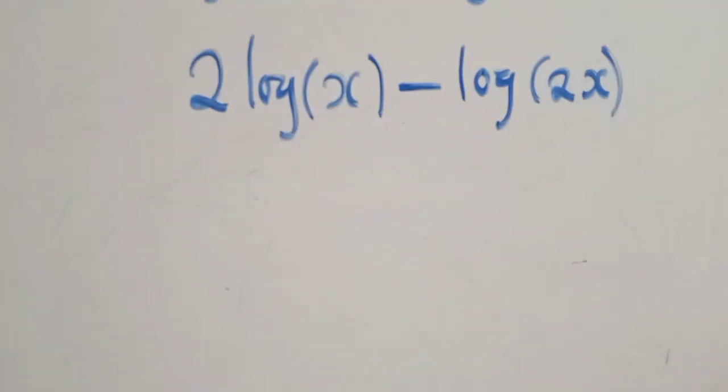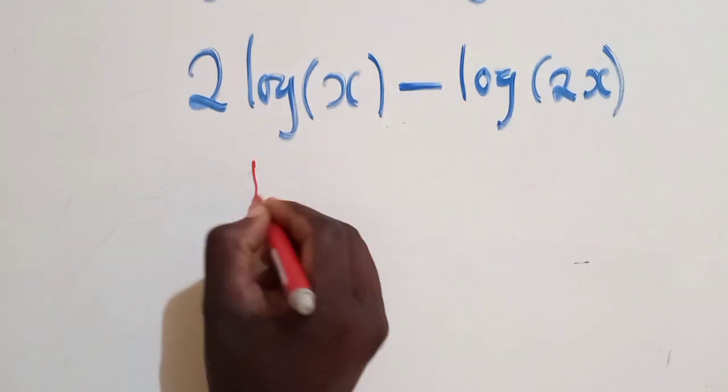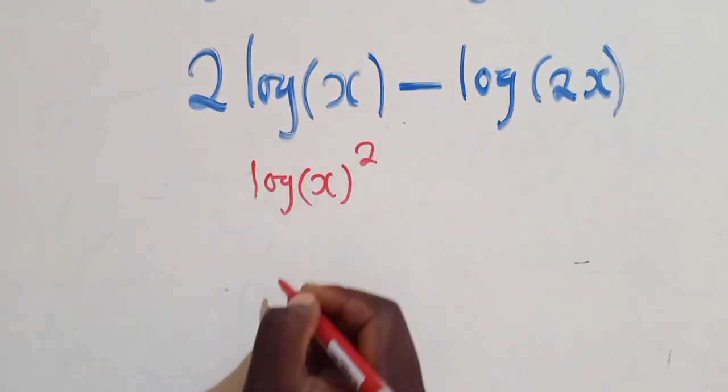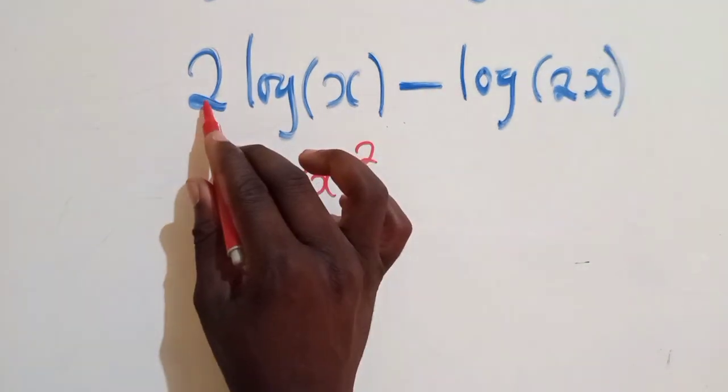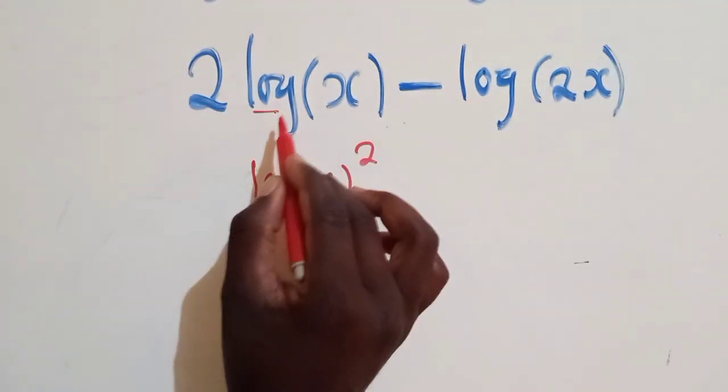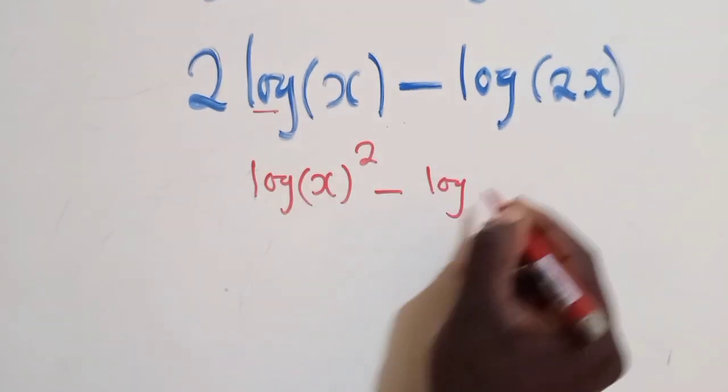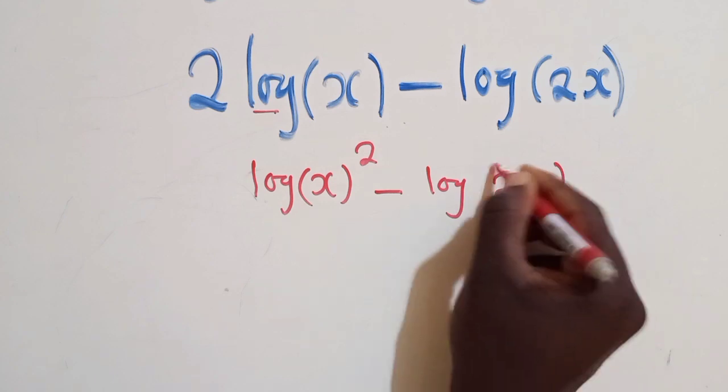Here we shall say log of X to the power 2. Property number 1: this 2, since it's in front of the log, it will become a power. And then we say minus log of 2X.